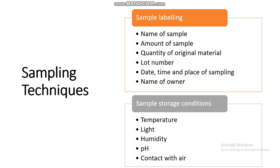Sample storage conditions must also be checked and followed. These include temperature, light, humidity, pH, and contact with air. All these conditions must be observed, and for different samples these conditions may vary.